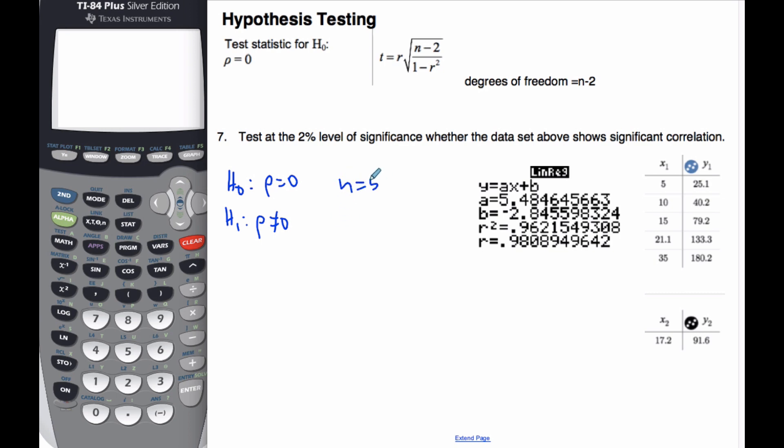I know that in this case N is 5. The degrees of freedom, because there's two variables, N minus 2, is going to be 3.